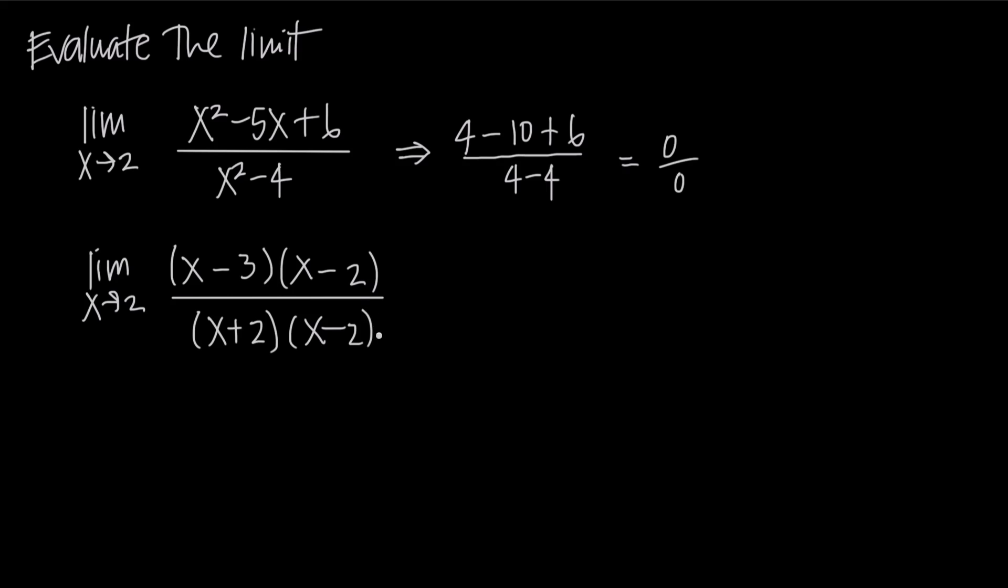Now at this point, we're in really good shape because what we see is that we have a factor of x minus 2 in the numerator and a factor of x minus 2 in the denominator. So of course we can cancel those factors from the numerator and denominator. They cancel with one another.